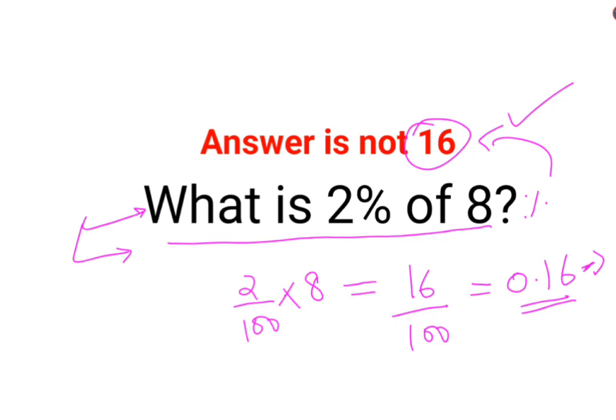But since they are talking about just finding the value, you just do 2% of 8 that means 2 upon 100 of 8 which gets you 16 upon 100. The answer for this one is supposed to be 0.16.